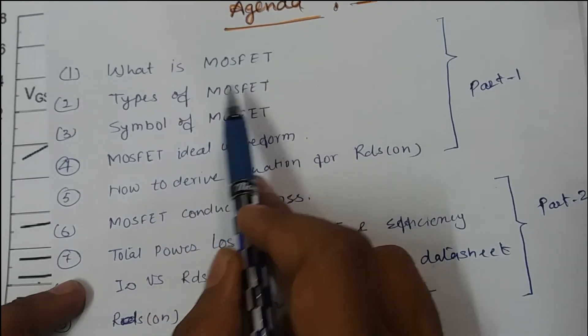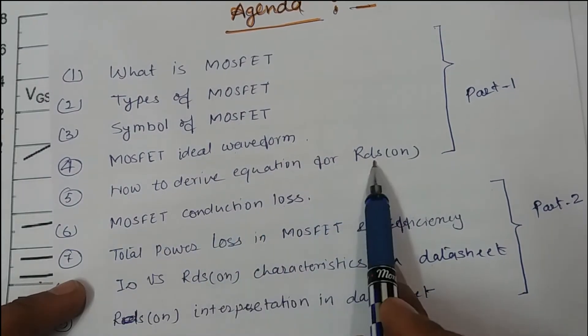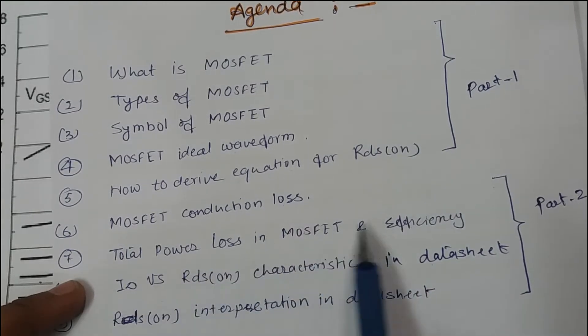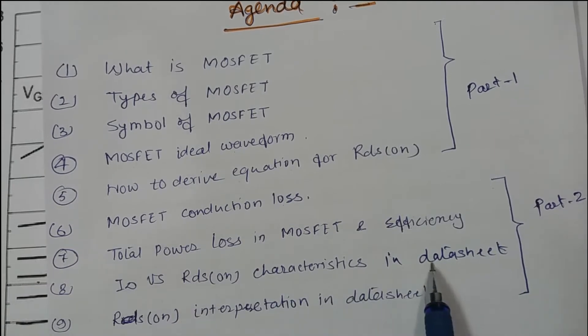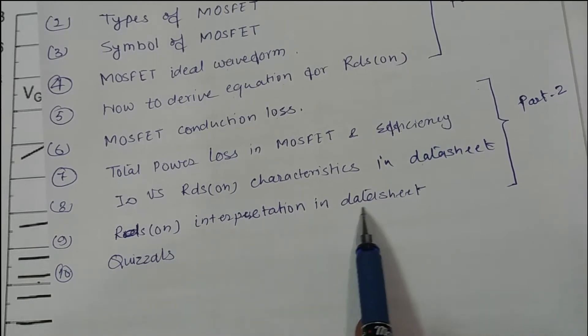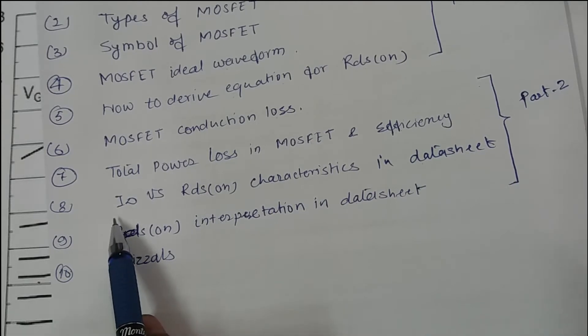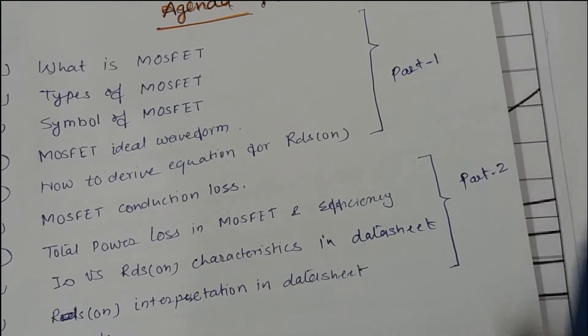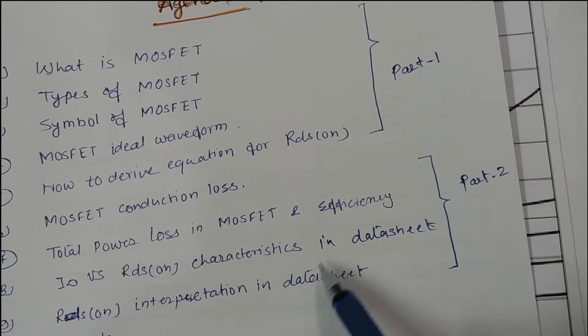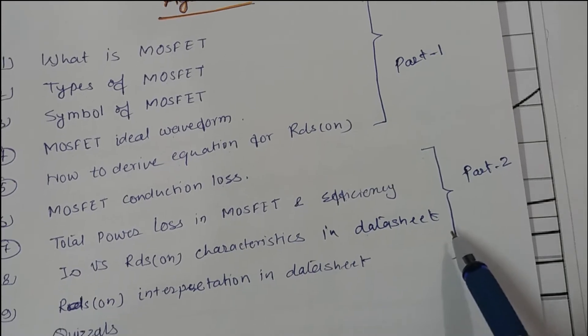The agenda includes types of MOSFET, symbol of MOSFET, MOSFET ideal waveform, how to derive equation for RDS on, MOSFET conduction loss, total power loss in MOSFET and efficiency, ID versus RDS on characteristics in datasheet, RDS on interpretation in datasheet, and quizzes. The last three sections are very important as I'm showing you some practical exposure. In the quiz section I'll ask some questions and you can solve them and leave your answer in the comment section. These topics are covered in two video tutorials, part one and part two, so please watch both videos.